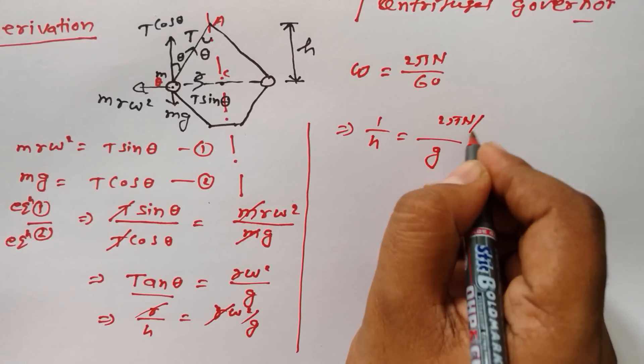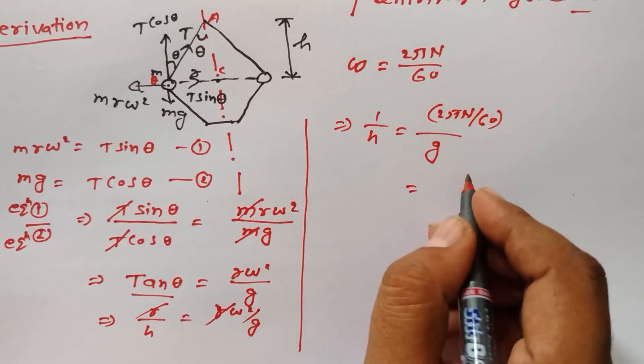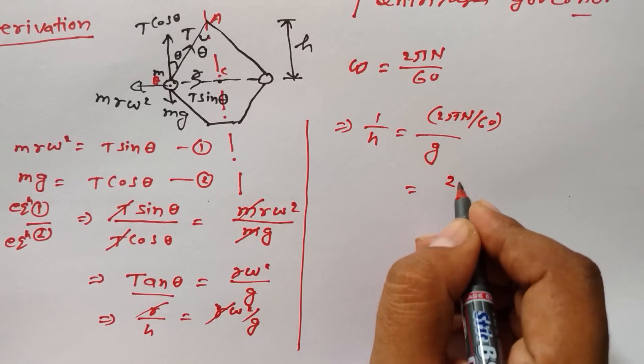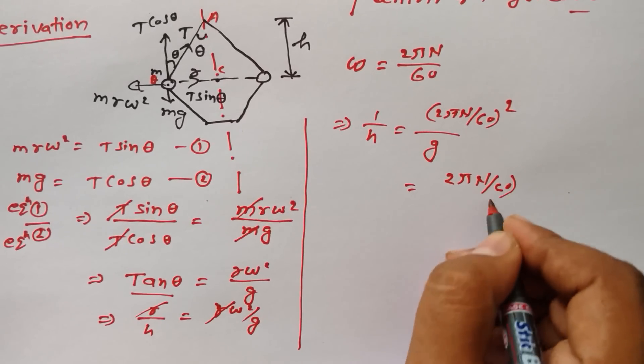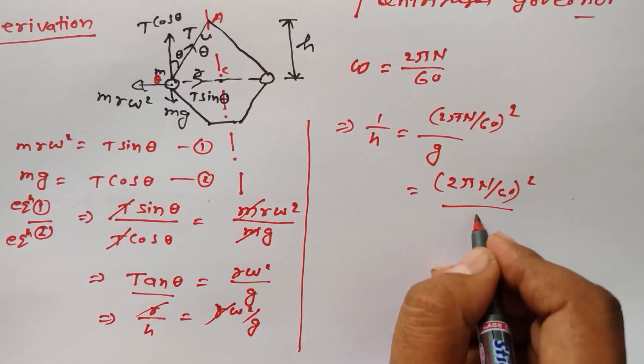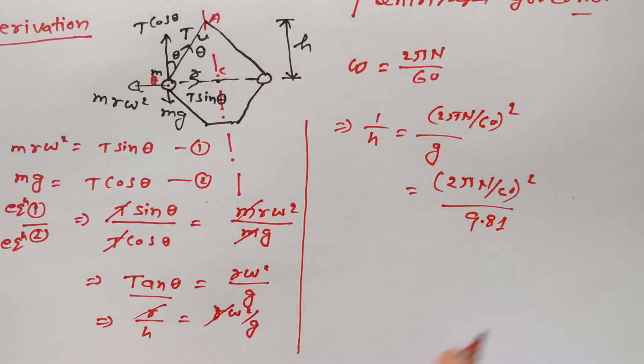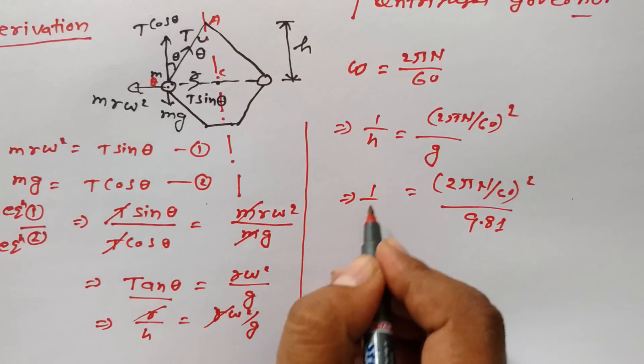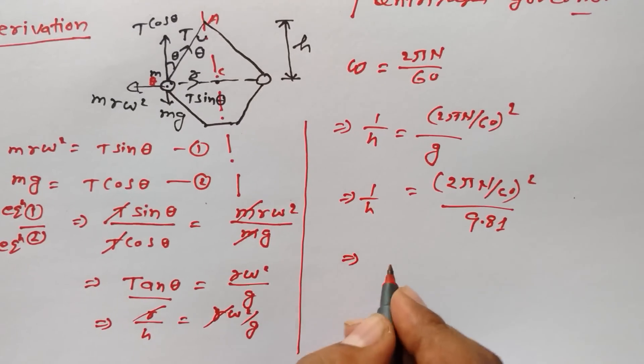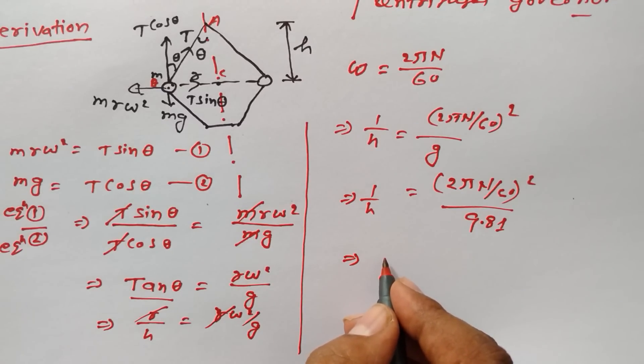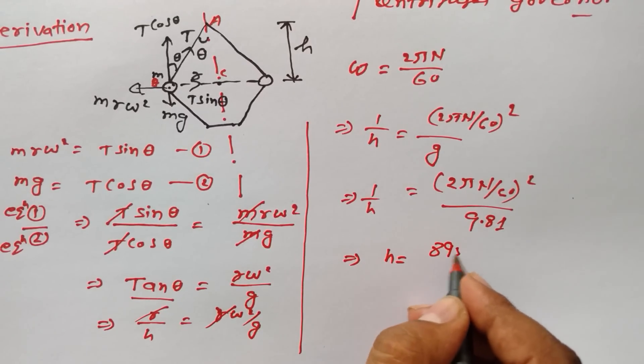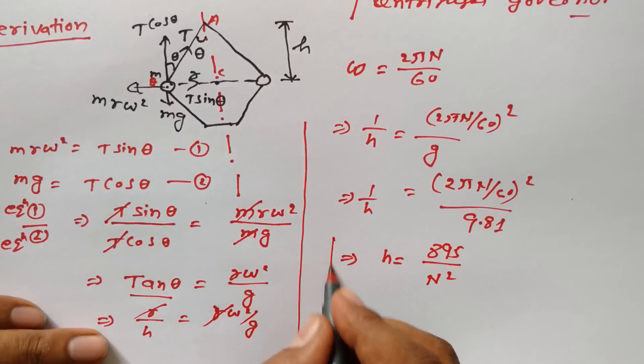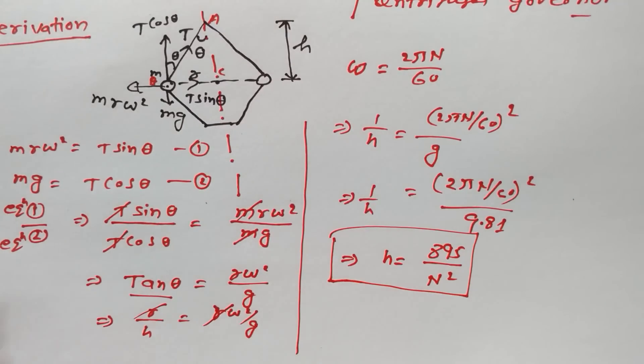2πn by 60 whole square, g is acceleration due to gravity 9.81. After simplifying, we get h = 895/n².